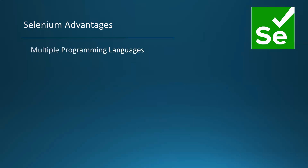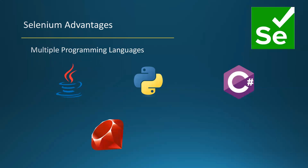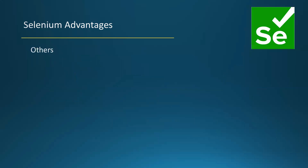Selenium supports multiple programming languages as well — Java, Python, C#, Ruby, and JavaScript. Another advantage is that it's open source, so you don't need to pay any license. There is also a huge community, so if you face any issues while writing scripts, you can easily get help from the community.